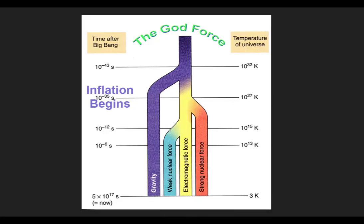At this point there is only one force. We call this force the God Force. So all the other forces — gravity, weak nuclear force, electromagnetic force, strong nuclear force — they're all going to come after the Big Bang. At approximately 10 to the minus 35 seconds, gravity splits up from the God Force. So there will be one force called gravity and three other forces that have not split up from the God Force yet.